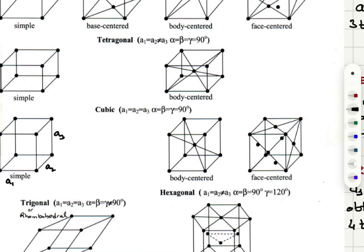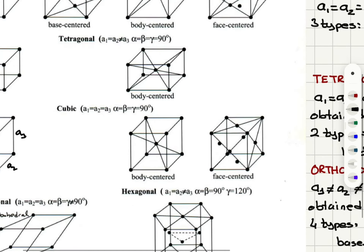Simple cubic has all points at the corners. Body-centered cubic has one point at the body center in addition. And face-centered cubic has all points at the corners plus face centers.